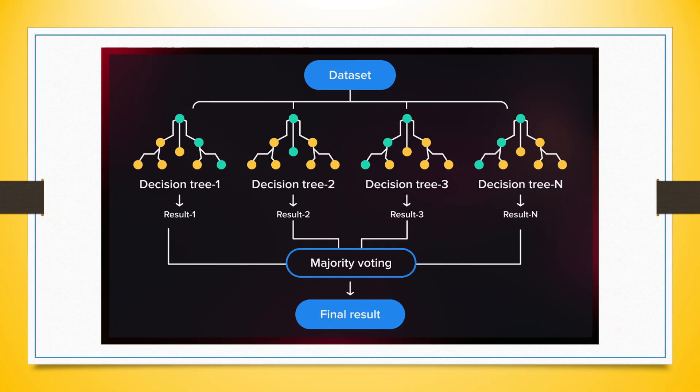As shown in the example, we are running many decision trees on one particular dataset, and we may get results from tree 1, 2, up to N. Out of these, majority voting is done and the final result is generated by the aggregation of all the decision trees.